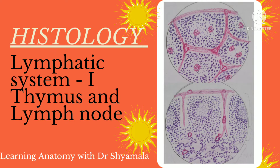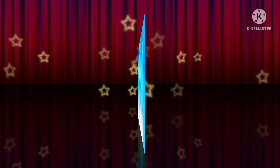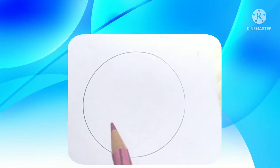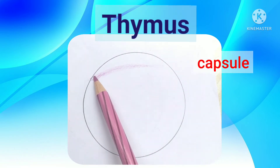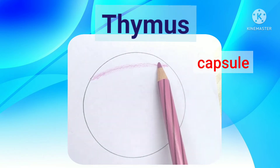Hello everyone, welcome back to my channel. Today we are discussing the lymphatic tissue, which are broadly classified into primary and secondary lymphatic organs. First we'll discuss the primary lymphatic organs - the thymus. Thymus is a primary lymphoepithelial organ which contains only T-lymphocytes.